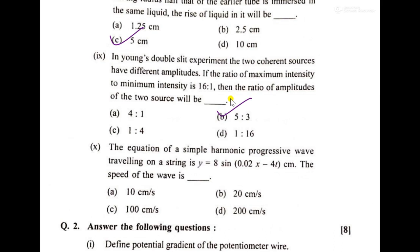Then the equation of the simple harmonic progressive wave traveling on the string, it is given as this formula and as per this, the speed V will be 200 cm per second.